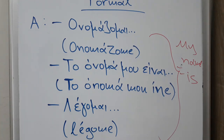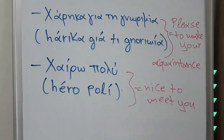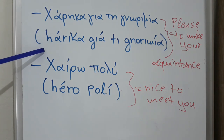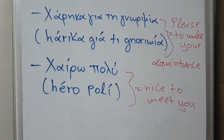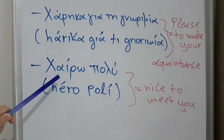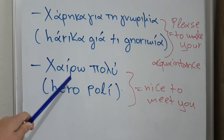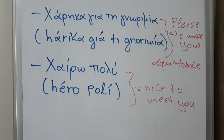If we want to be more polite in formal situations, we add the phrase χάρηκα για τη γνωριμία — pleased to make your acquaintance. We can also use χαίρω πολύ, meaning nice to meet you; this phrase can be used in both informal and formal situations.